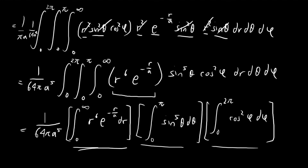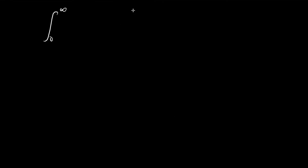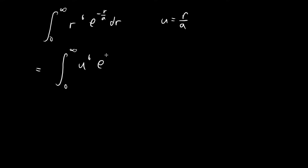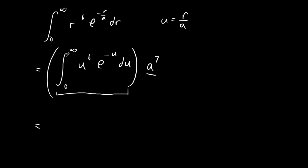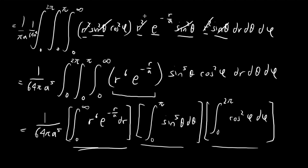For the first integral, we have r⁶ e^(−r/a) dr. Using the substitution u = r/a, this becomes a⁷ times the integral of u⁶ e^(−u) du. Invoking the gamma function, this integral equals 6 factorial. So the entire r integral equals 6! times a⁷.